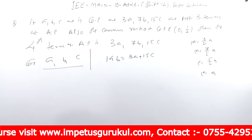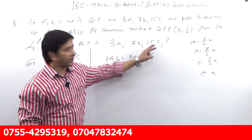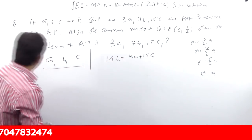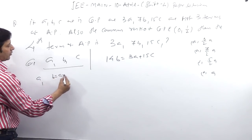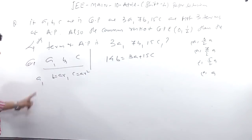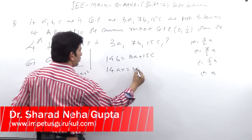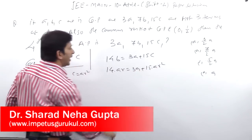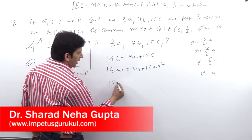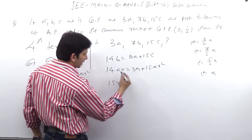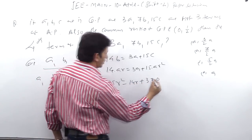Since A, B, C are in GP, let B = AR and C = AR². Substituting into the AP condition: 14AR = 3A + 15AR². Dividing by A throughout gives 15R² - 14R + 3 = 0.